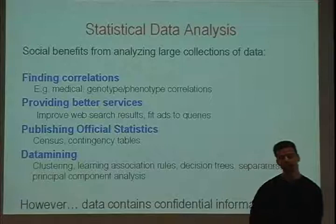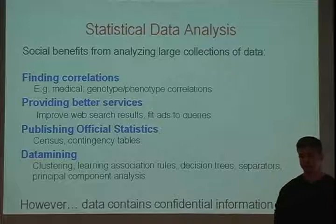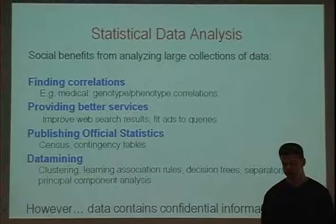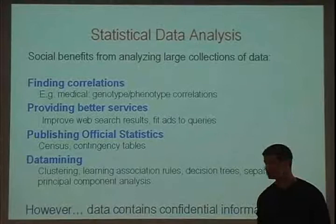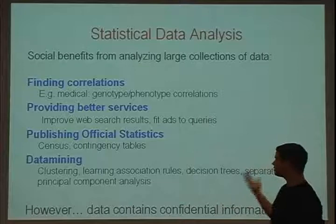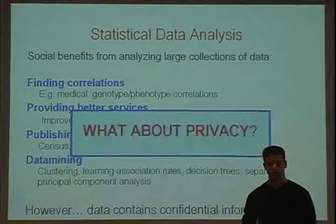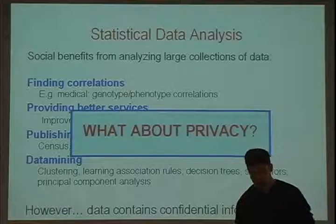We can get a lot out of statistical data analysis. But the concern for today is that often when we're doing this analysis, we're doing it about data containing sensitive information about individuals. For example, running a medical study — people's medical records are sensitive. Even if we're trying to improve our search engine, we're doing it based on users' queries, and people's search queries are very sensitive information. The data contains confidential information, but the results of the analysis are made public. The question is: what happens to people's privacy? Is it compromised? Is it protected?